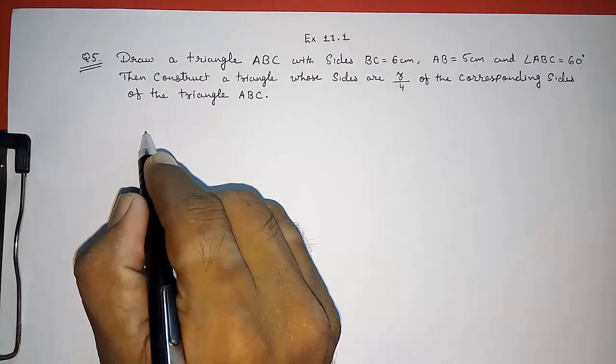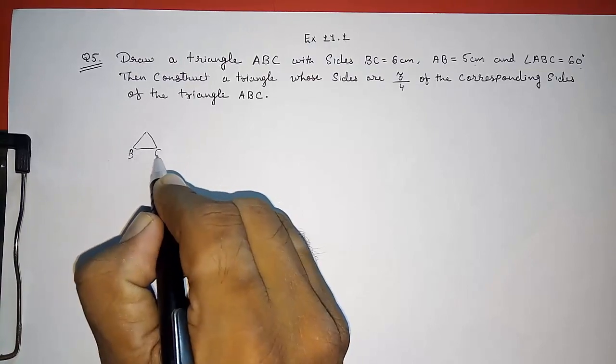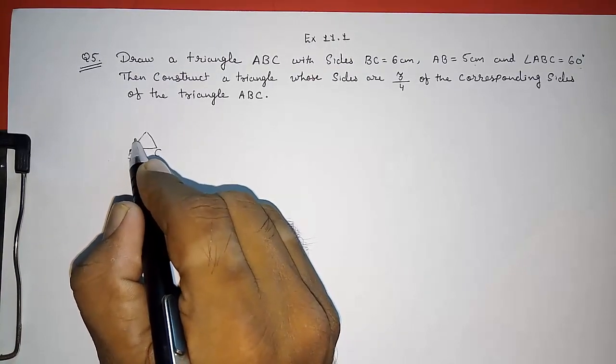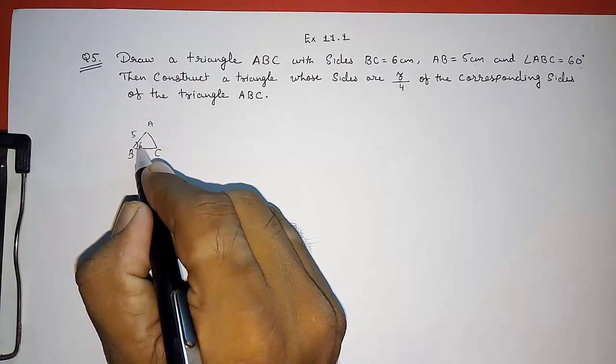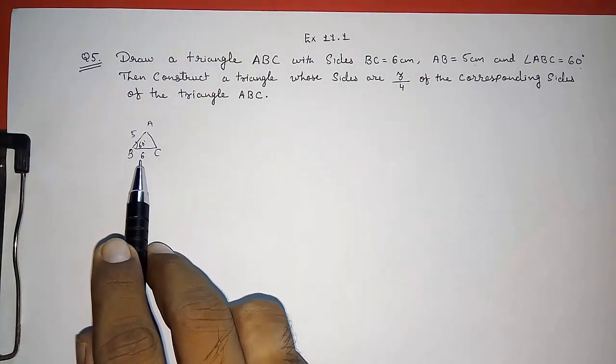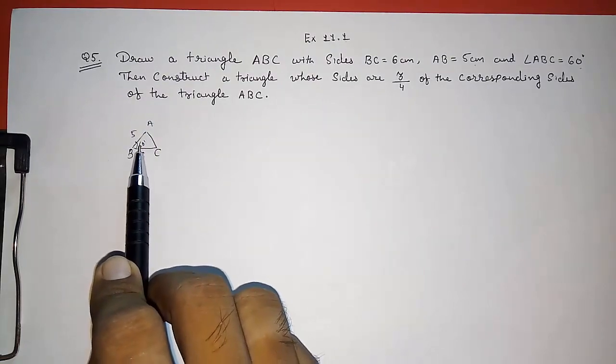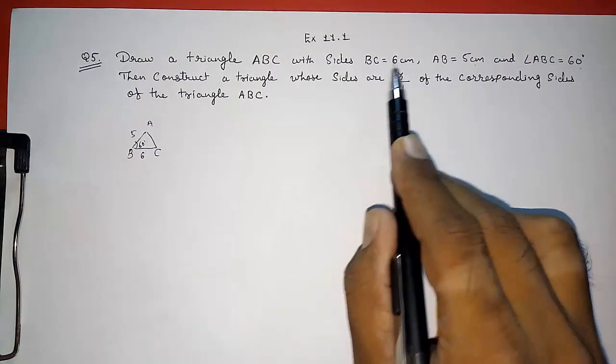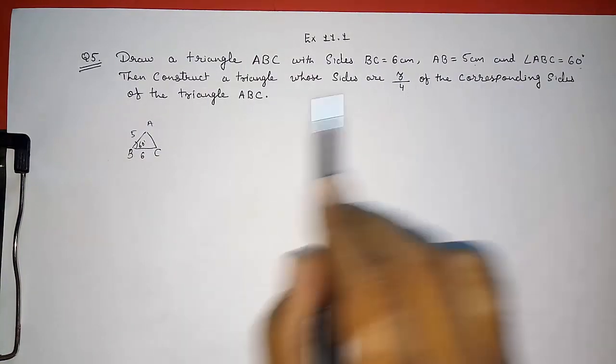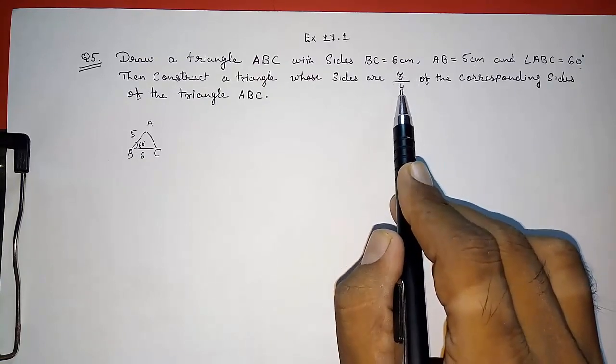First we have to draw a triangle ABC with BC 6 centimeter, AB 5 centimeter and angle ABC 60 degrees. So I am drawing it a little bit smaller and you can see a triangle ABC with BC 6, angle B 60 and AB 5 centimeter. Then we have to draw another triangle that is 3 by 4 of this triangle. Here we are getting a proper fraction.